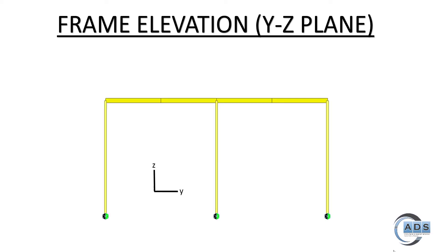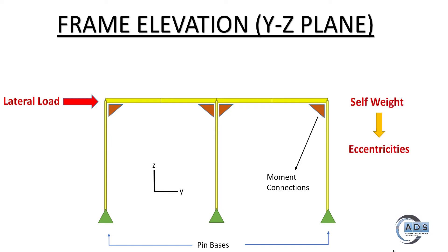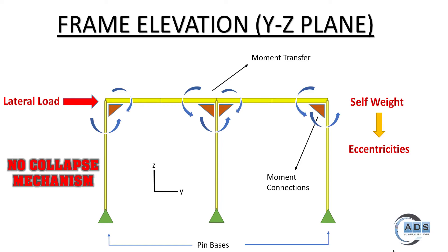Looking at the frame elevation in the YZ plane, which also has pin supports at the bottom — here beams and columns have moment connections. If lateral load is applied or due to self-weight eccentricities, no collapse mechanism will be generated because of the moment transfer at the joints.